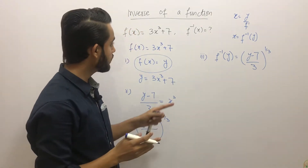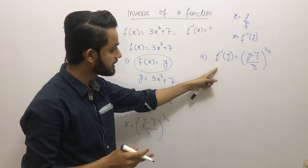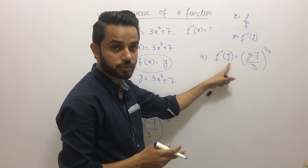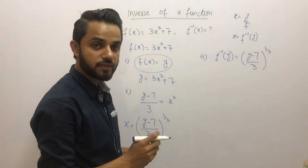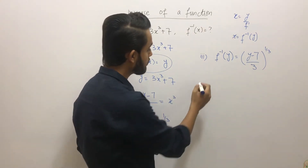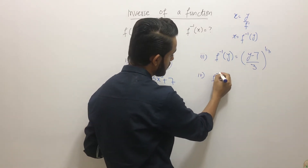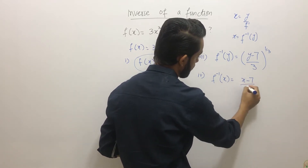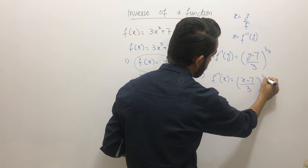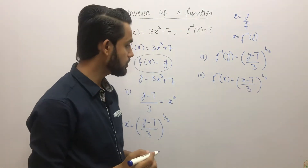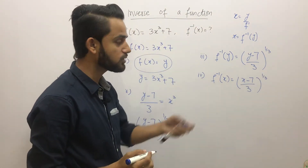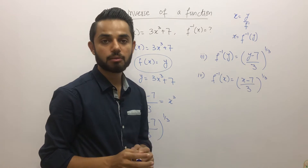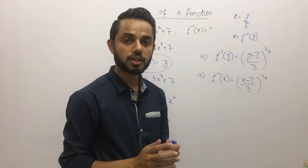Step 4: our purpose was to find f⁻¹(x), so we replace y with x. The final answer is f⁻¹(x) = ((x − 7)/3)^(1/3). I hope the inverse of a function is now very clear. Now let's move on to the composition of functions.